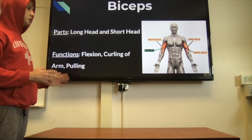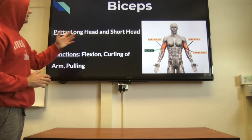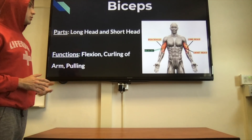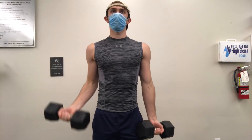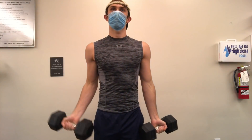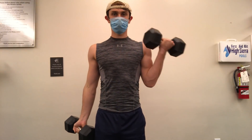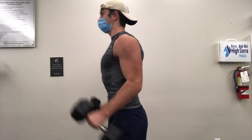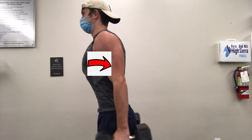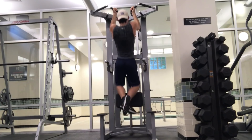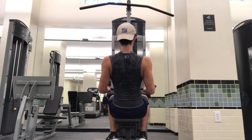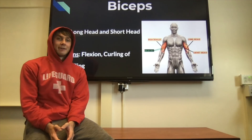The biceps have two heads — that's where the prefix 'bi' comes from — the long head and the short head. Flexion, curling, and pulling all involve the biceps. To target the short head, move the weight to the outside of your bicep as you curl, moving your wrist laterally away from your shoulder. To target the long head, move your arm in toward your opposite arm. Any pulling movement — pull-ups, chin-ups, lat pull-downs, rows — also works your biceps as a secondary muscle.